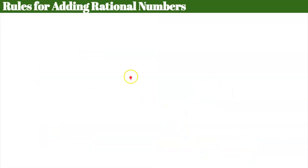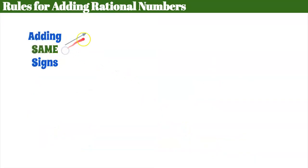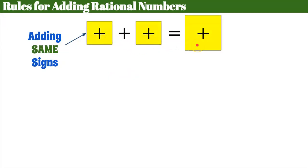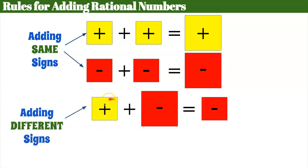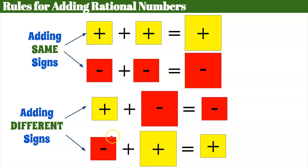Let's review our rules from today. Same signs: positive plus positive gives a positive sum; negative plus negative gives a negative sum. Different signs: subtract the smaller absolute value from the larger, and take the sign of the larger absolute value. Please make sure these are in your notebook. Same sign — add and keep the sign. Different signs — subtract the smaller absolute value from the larger, and take on the sign of the larger absolute value.